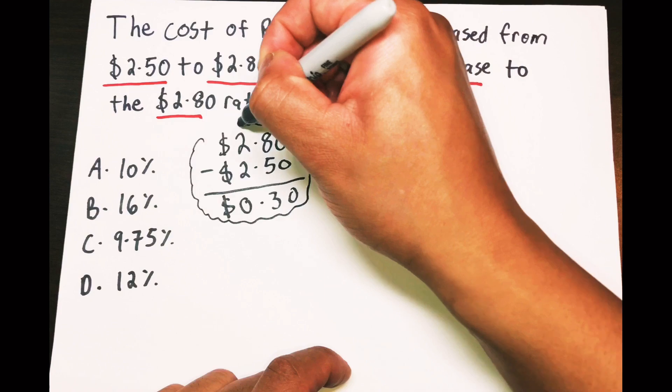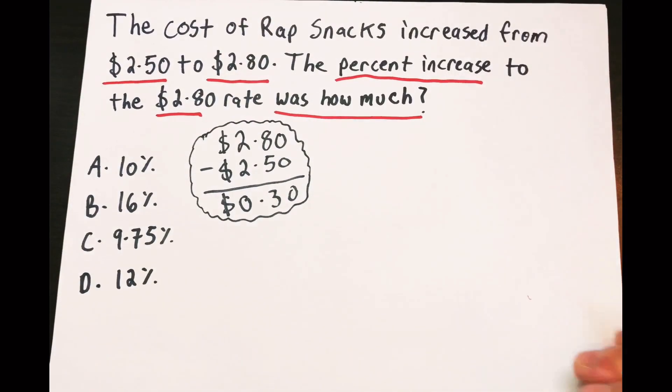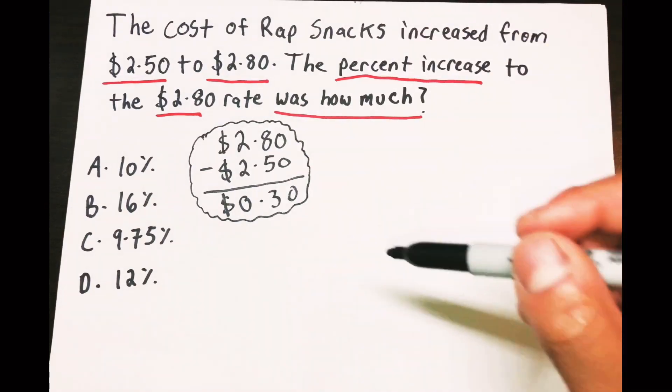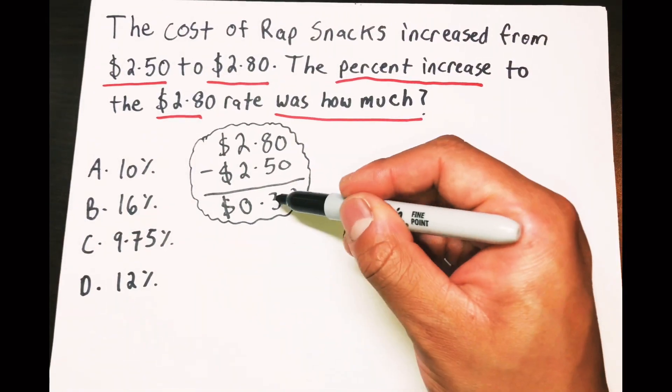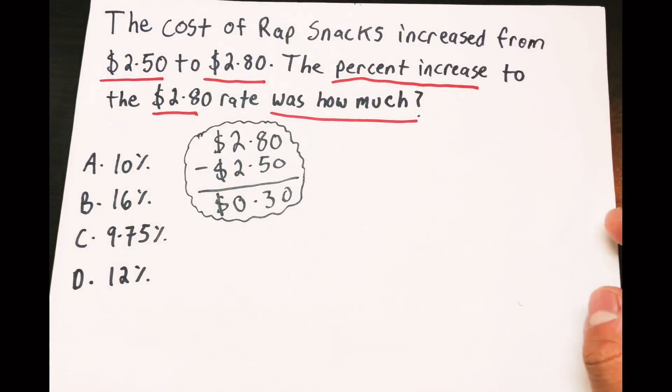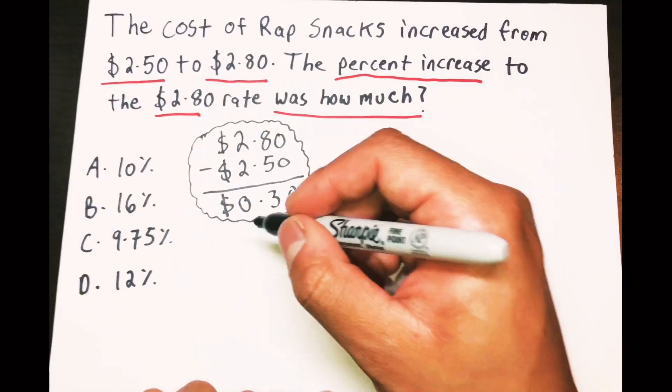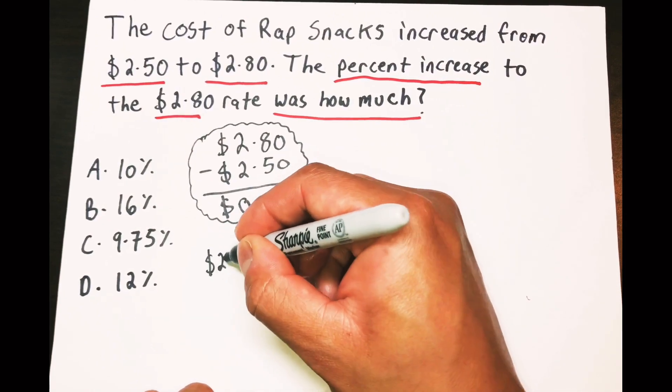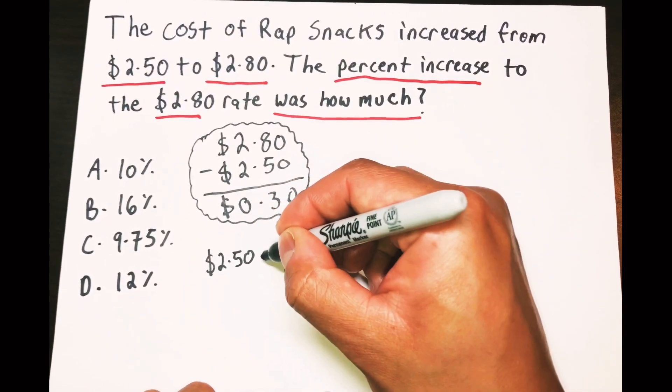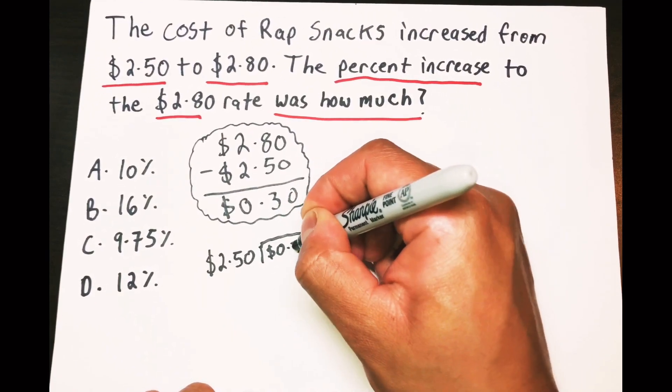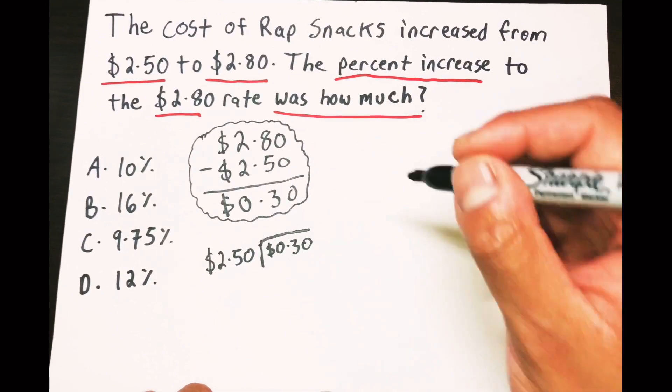Now I want to know the percent increase from that to that. So what I'm gonna do is take the 30 cents and divide it by that, and that'll give me a percentage. Now I have the $2.50 and then I have the 30 cents on the inside.